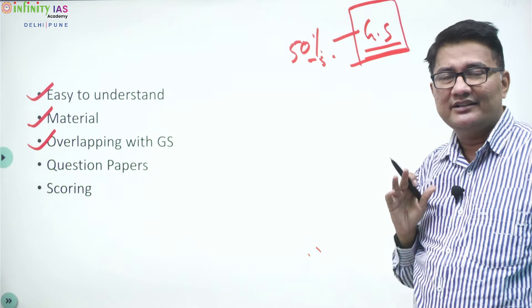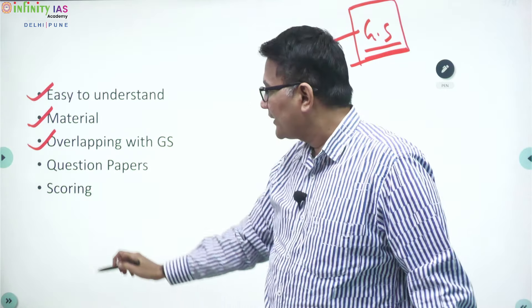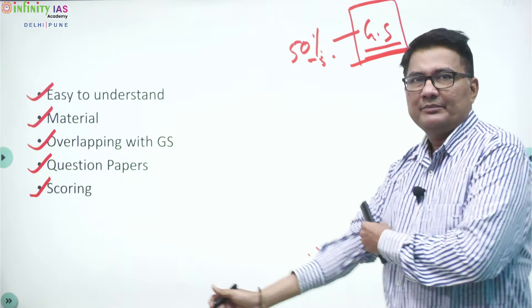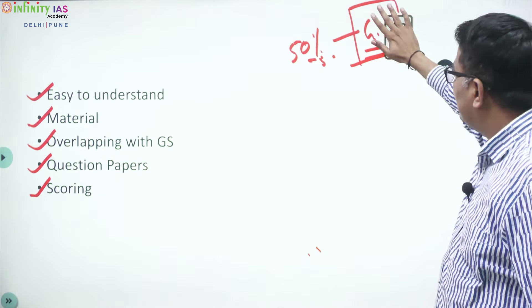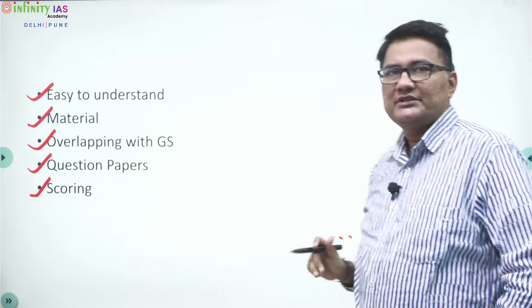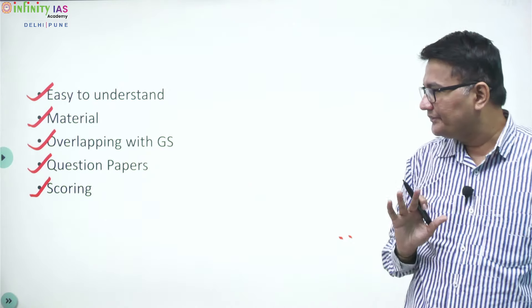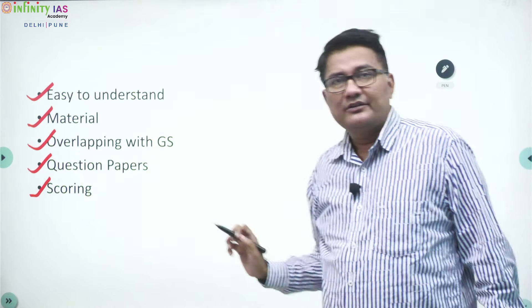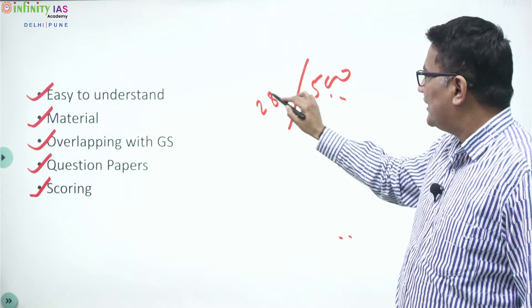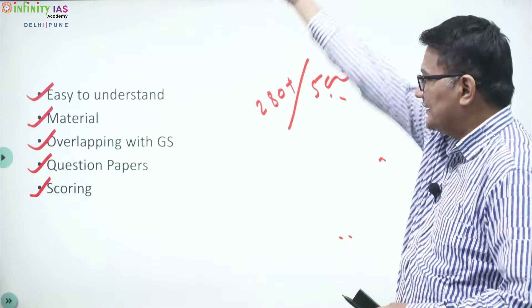This is the most important advantage of political science. Now, the next point is question papers and scoring. If you analyze the last 30 years of question papers, you will find that questions are mostly simple and straightforward. They are linked with current affairs, and it is very good for scoring — students can score 280 plus marks out of 500 if they prepare very well for political science.